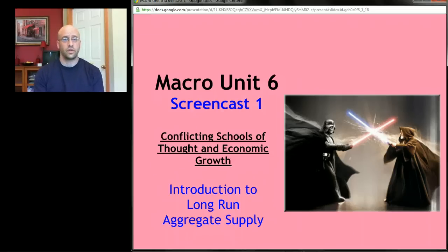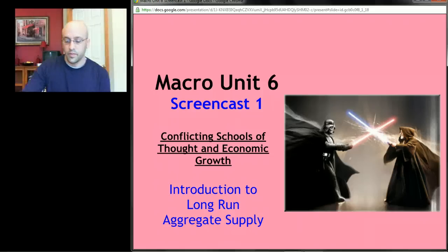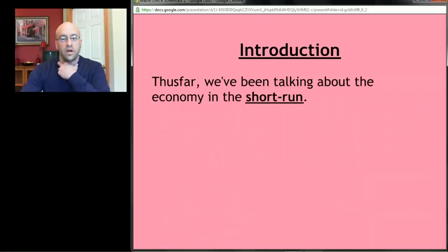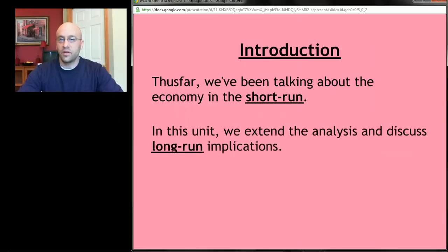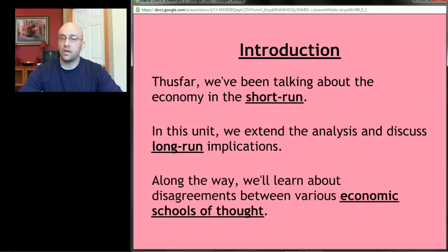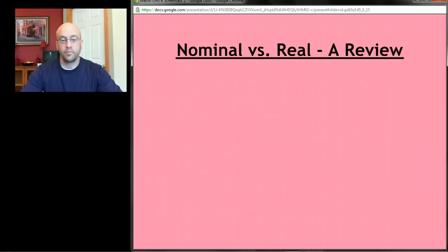So far we've been talking about the economy implicitly in what's called the short run. I haven't really made that distinction because I hadn't told you that something called the long run exists. In this unit we're going to look at some of the long-run implications of the aggregate demand-aggregate supply model and fiscal and monetary policy, and we're going to learn about some disagreements economists have and different schools of thought.